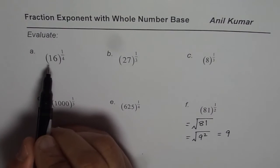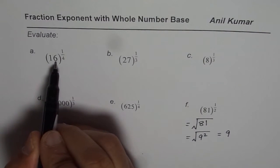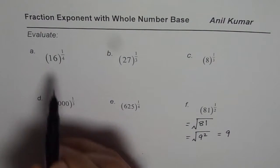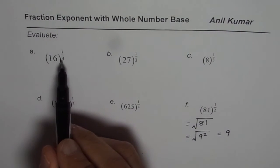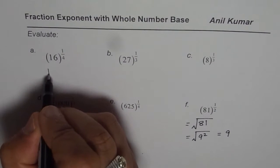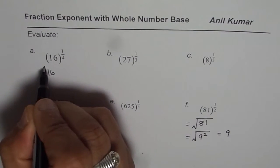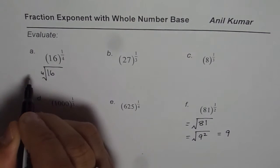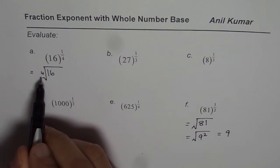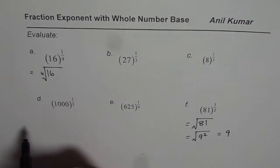Now, let's go back to the very first question, which is 16 to the power of 1 over 4. In this, earlier we had 1 over 2. This time it is 1 over 4. Basically, we are trying to find the 4th root of 16. This is written in radical form as 4th root of 16. That is what it means.